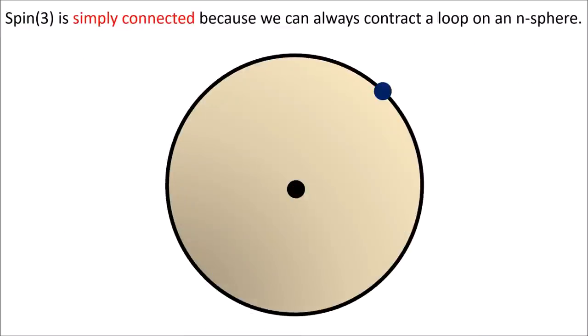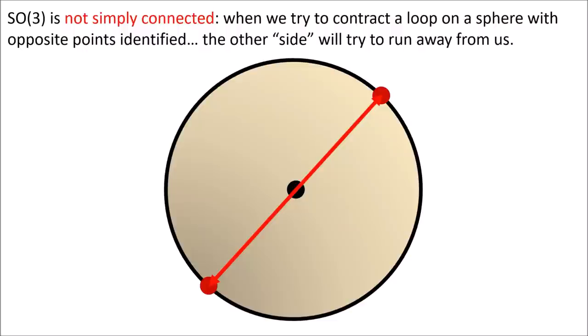I also talk about how spin groups are simply connected because we can always take a loop and contract it down to a point but the rotation groups are not simply connected because when we try to contract a loop on one side the other half sort of runs away from us meaning it's impossible to contract the loop.